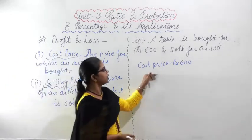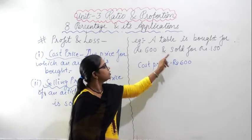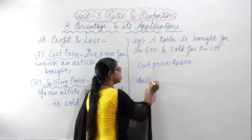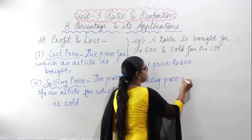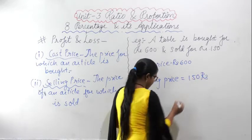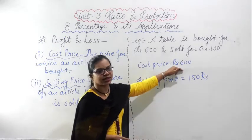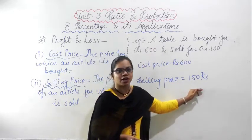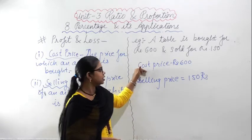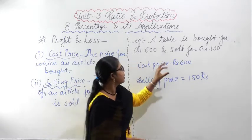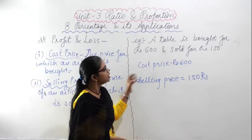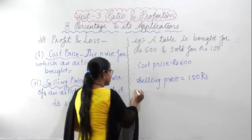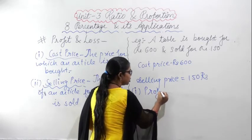So the table is bought for Rs. 600 and after that sold for Rs. 150, meaning the selling price is Rs. 150. Cost price is the amount you purchase the item for, and selling price is the amount at which you sell the item. Now the condition for profit and loss: when do you get profit and when do you get loss?